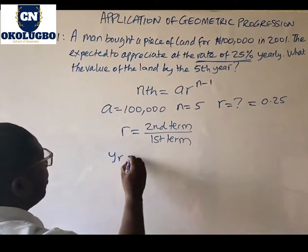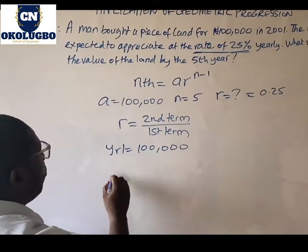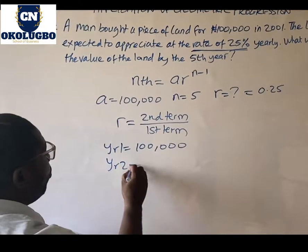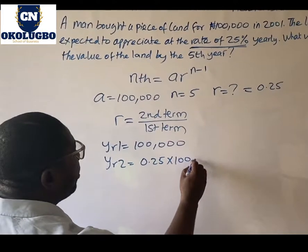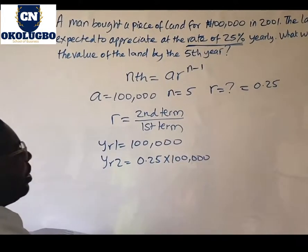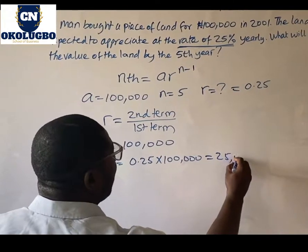Year 1 is 100,000. Now for year 2, it will be 25% times 100,000, and this will give us 25,000.